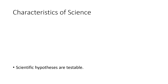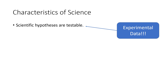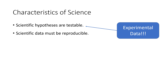Some characteristics of science: scientific hypotheses are testable. In order for something to truly be science, you have to be able to do some sort of test — we call that an experiment. These tests generate tons of experimental data, and that data must be reproducible to be considered scientifically valid. This means that if I do an experiment in a lab in San Marcos and another scientist does the exact same experiment in Beijing, China, we have to get the same results. If we're not getting the same results, it's not science — one of us is doing something wrong.